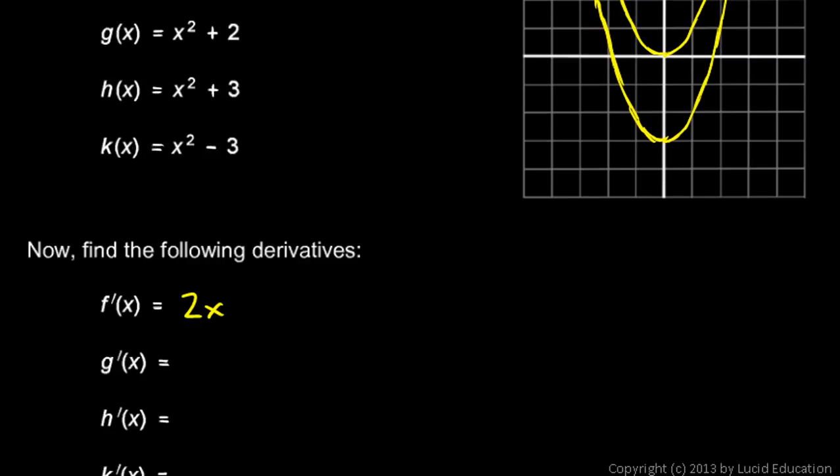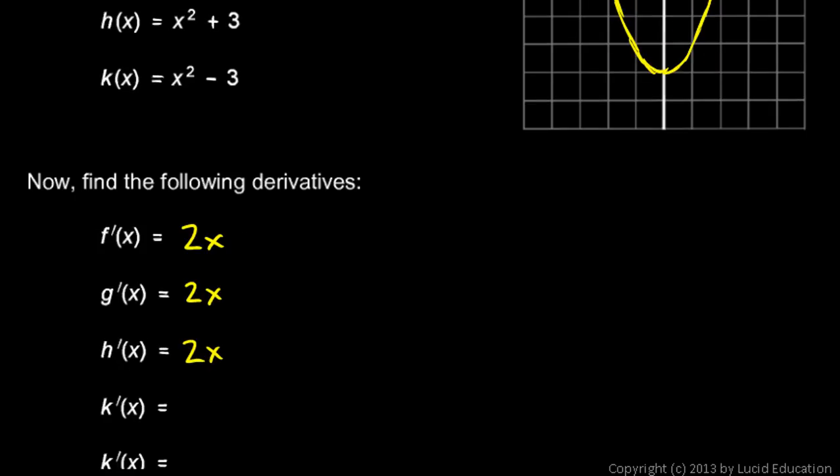The derivative of g, g'(x), is also 2x. The derivative of h, h'(x), is 2x. And the derivative of k, k'(x), is 2x. So all of those functions have 2x as their derivative.